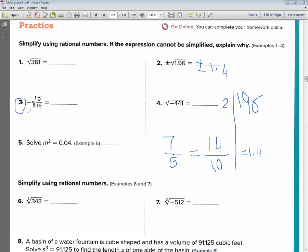Number 3. Negative square root of 9 over 16. We are going to divide the 9 over 16, right? Factorization? Nothing is common between them. Right. Square root of 9 is? It's 3.